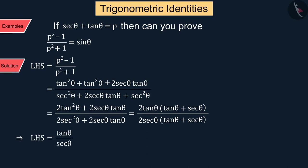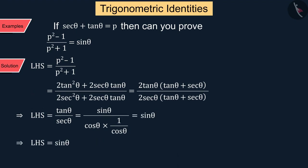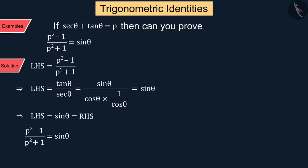We know that tan θ can be written as sin θ upon cos θ, and sec θ as 1 upon cos θ, from which we get the left side value sin θ, which is equal to the right side of the given equation. Thus we have proved it. But is this the only way to prove this equation?